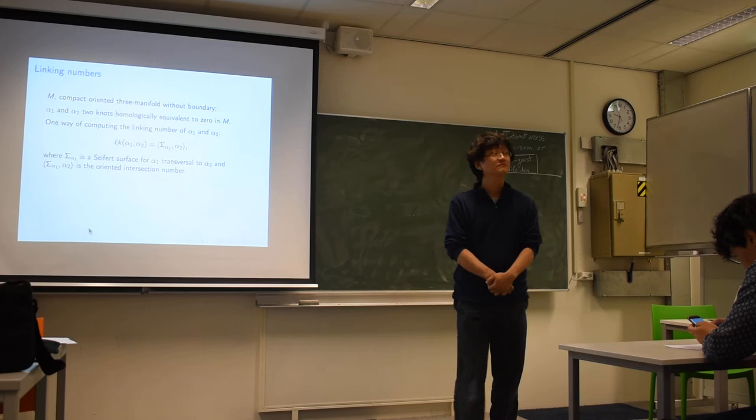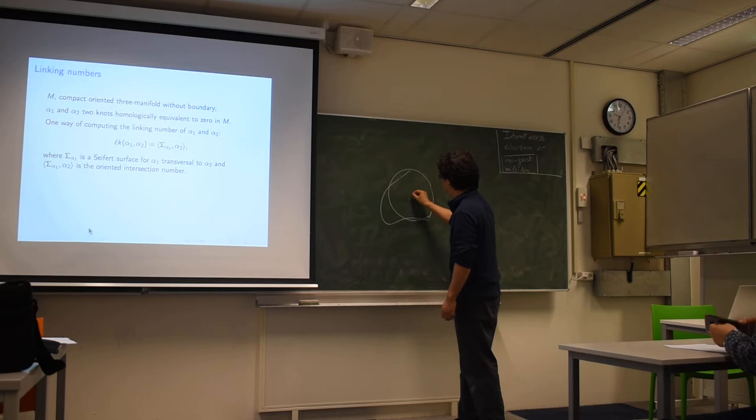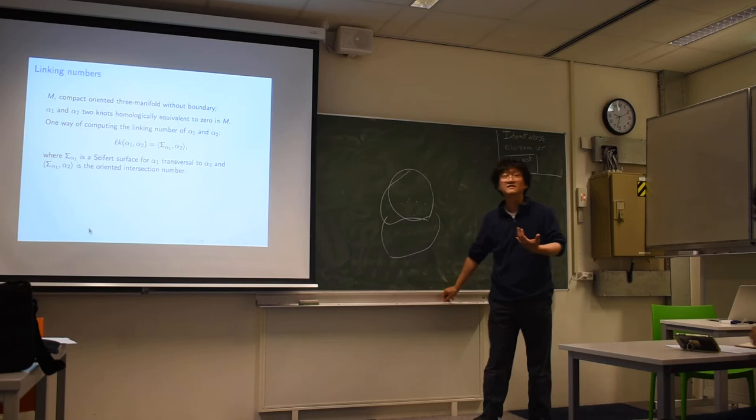I should have drawn a picture, but I'm not going to draw a picture—maybe I can draw one here. I still can't draw it, but you take some kind of a surface here and see how it intersects with the other knot. That's how you compute the linking number.